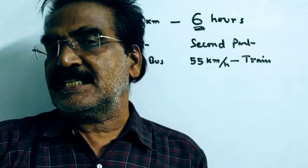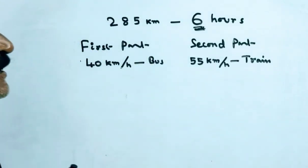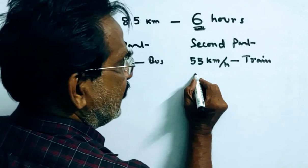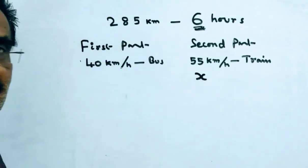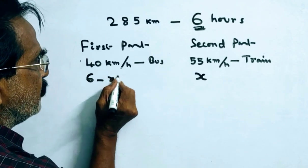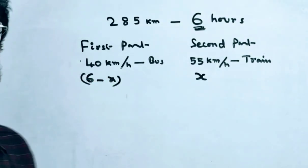Now the question is, the distance traveled by train. Total he traveled 6 hours. Let us say he traveled x hours by train. Then 6 minus x hours by bus.